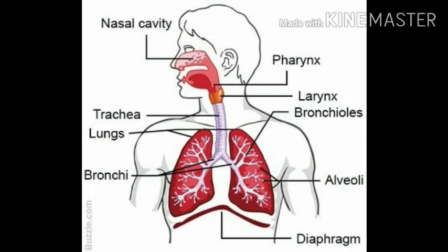The first organ we are going to study is the nose. The nose is the point of entry for air. It has two openings called nostrils, and each nostril leads to a nasal chamber. The nostrils have a hairy lining to prevent dust particles from reaching the lungs. The nasal chamber also has a sticky fluid called mucus. The nasal chamber warms and moistens the air entering the lungs. The inner lining of the nose has special cells used for smelling.